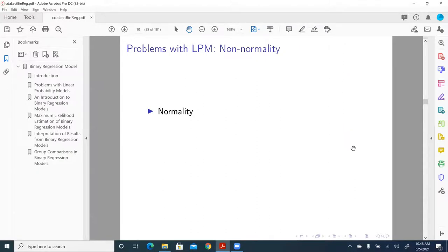Second problem with applying linear probability models to binary variable is non-normality. Since Y is binary, the errors are not equal. It's either epsilon 1 or epsilon 0, and they're not equal, as shown in the graph that I just talked about.